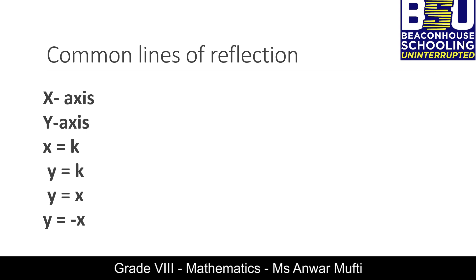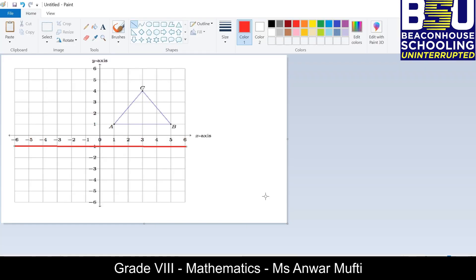We will try reflection with all of these lines of reflection to deduce some rules. Now let us look at how a 2D shape is reflected over a given line of reflection. Here the line of reflection is y = k, a horizontal line passing through the point k. In this case k is negative 1, so the line of reflection is y = −1. This red horizontal line passing through −1 is the line of reflection.